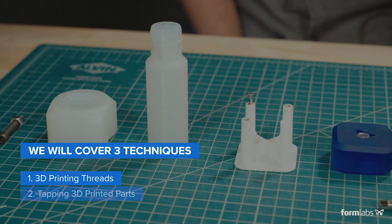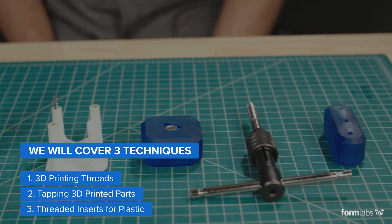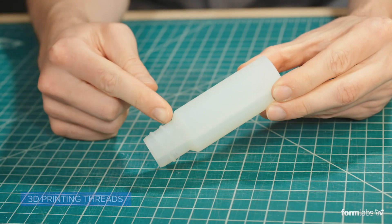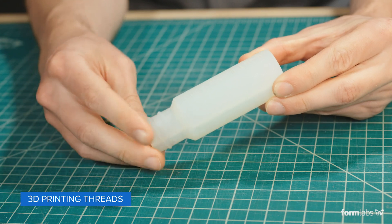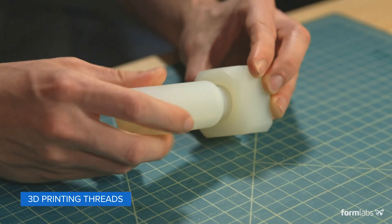Let's take a look at some common methods for joining 3D printed parts along with the pros and cons of each method. One option is to include threaded geometry on the printed parts themselves. While this technique can be very effective, there are some guidelines to follow for success.